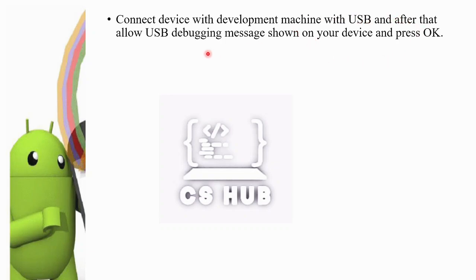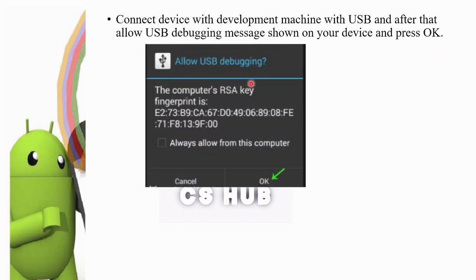After connecting, allow the USB debugging message that appears on your device and press OK. You will see a message like 'Allow USB Debugging?' and then confirm — USB Debugging is now enabled.